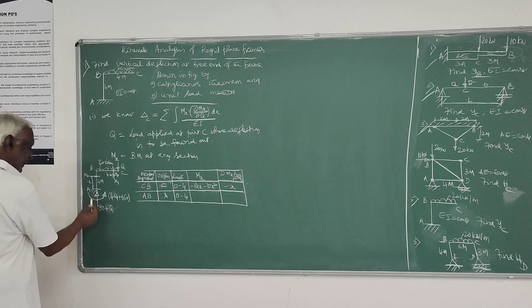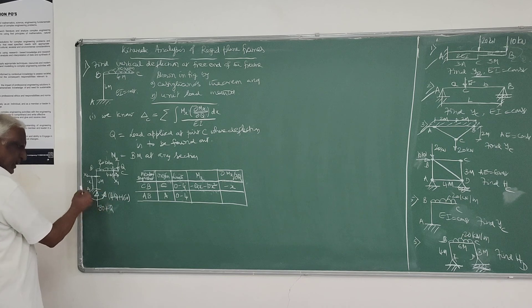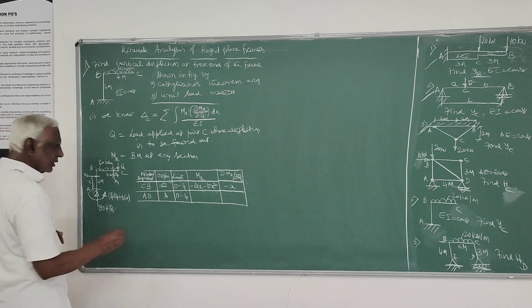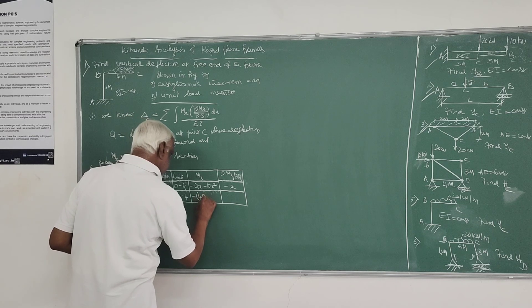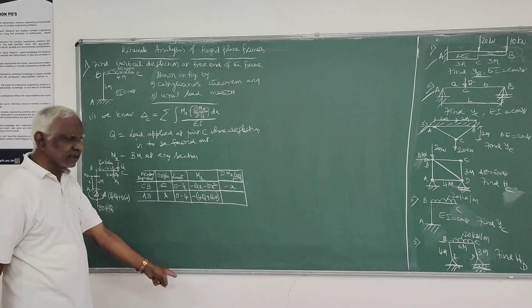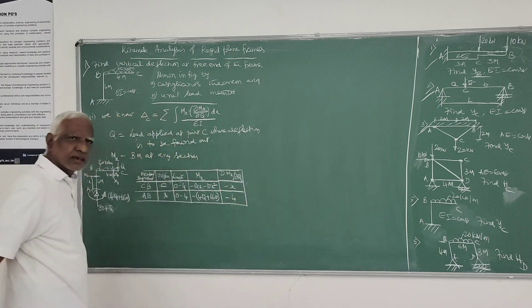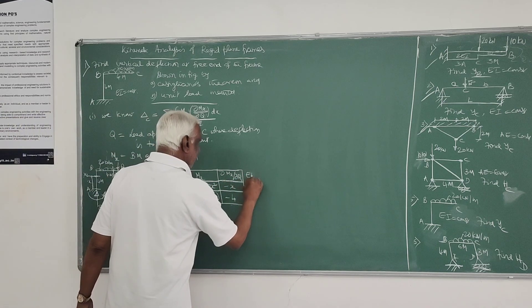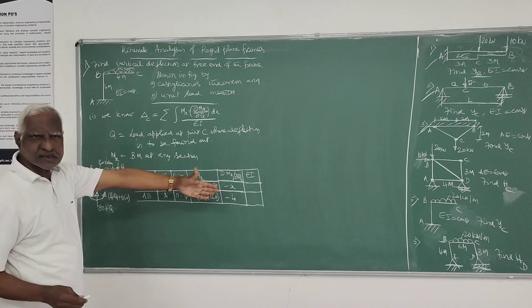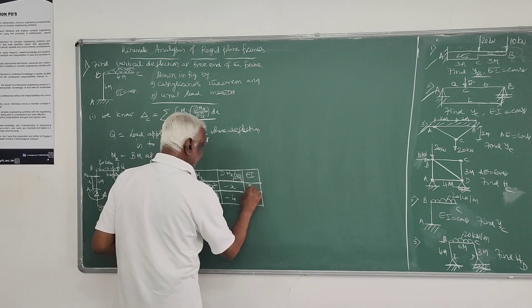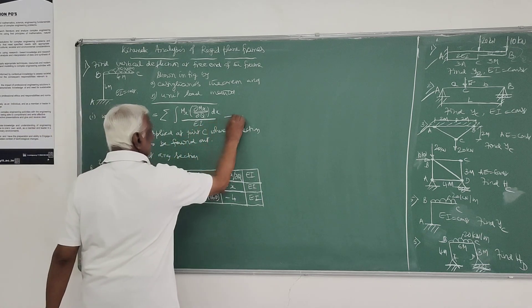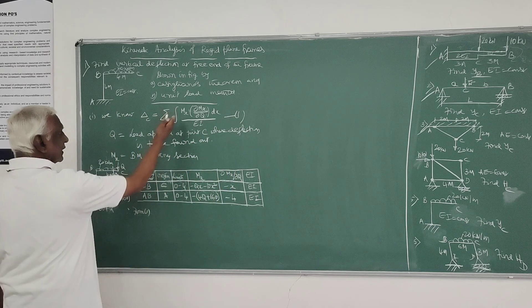For AB, it is minus 4Q plus 160. There is no X involved, just minus 4Q plus 160. If you differentiate partially with respect to Q, you get only minus 4. Here you will use for both these segments the same EI. If you give different values you take accordingly. Then from equation 1, you substitute all these values.